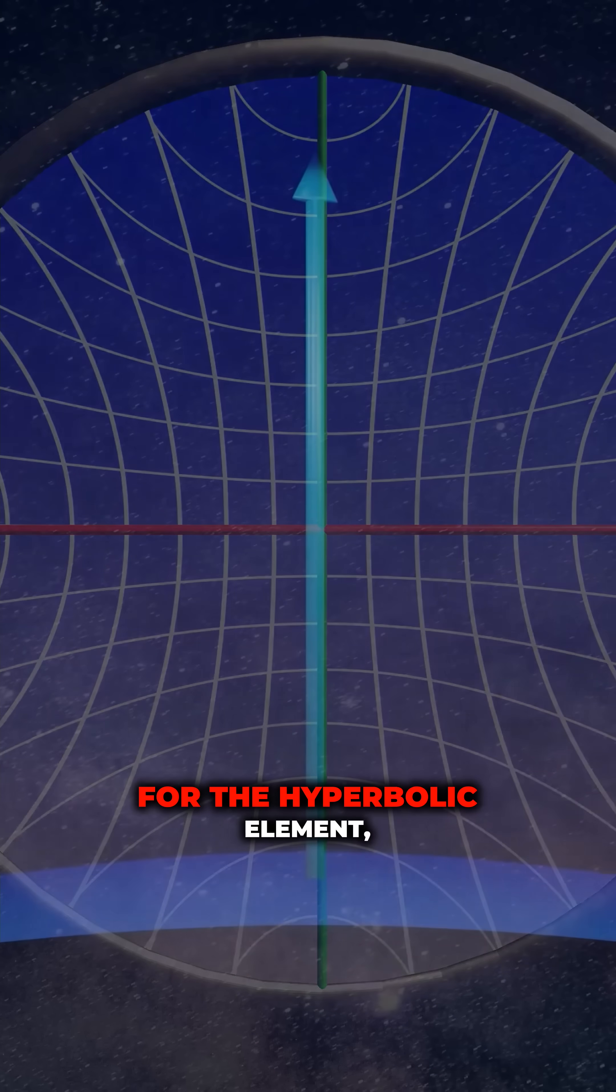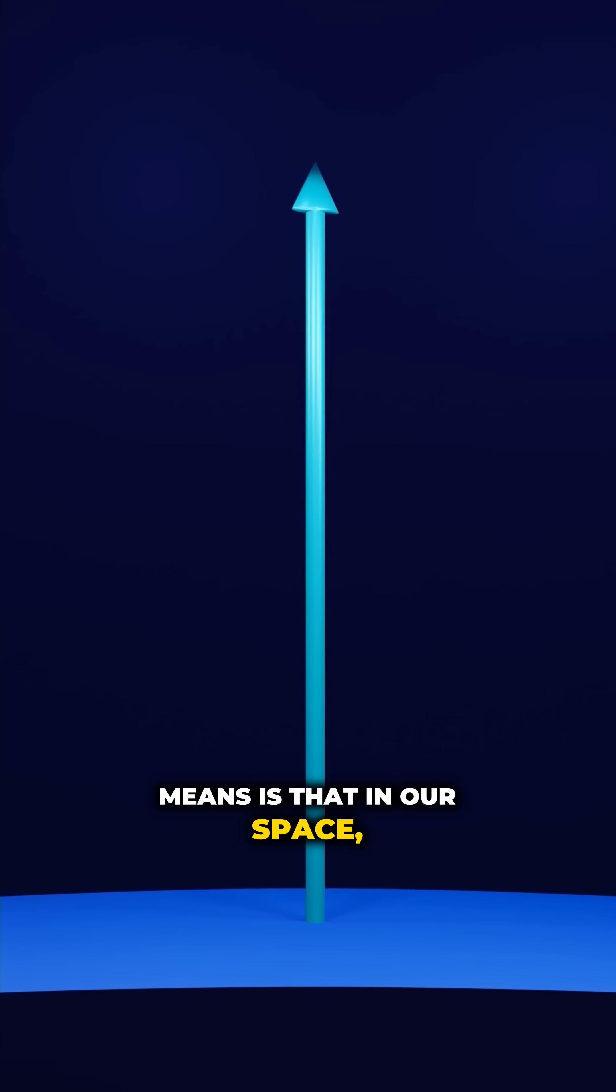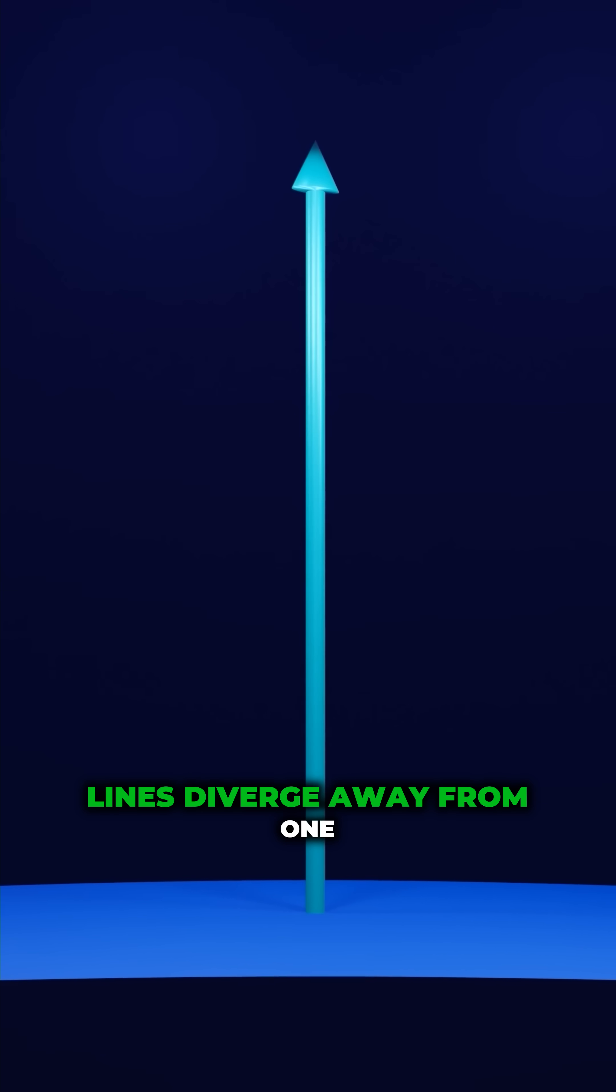For the hyperbolic element, all that means is that in our space, all the lines diverge away from one another, always.